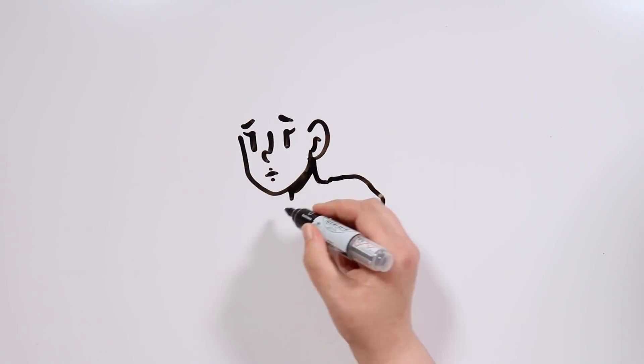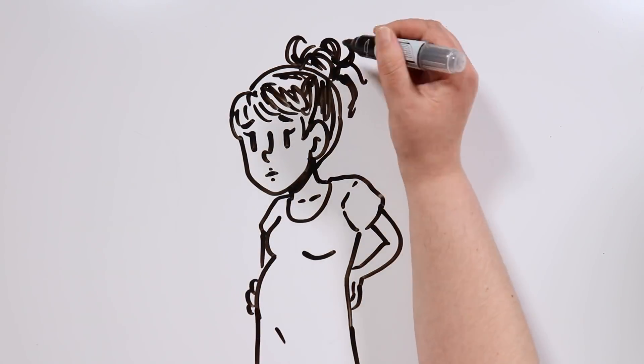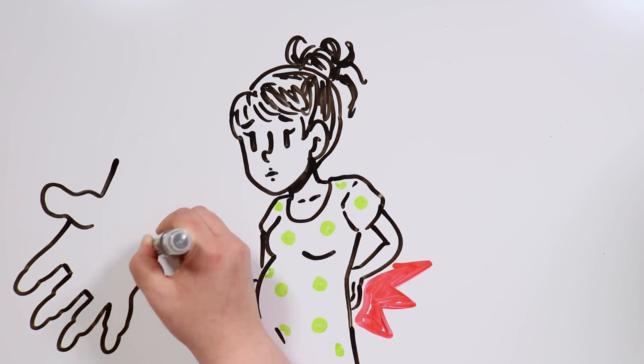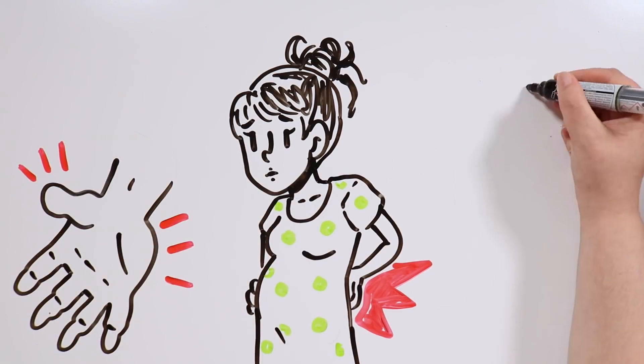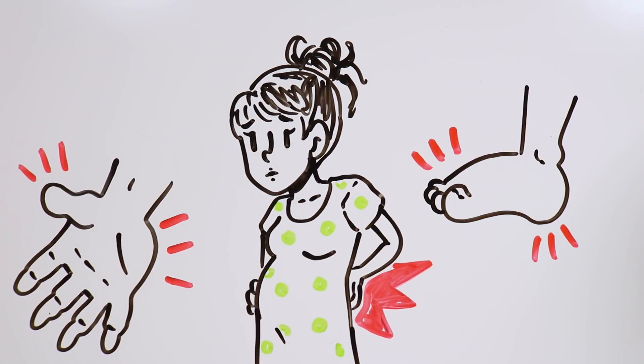During the third trimester of pregnancy, the belly becomes so big that it can cause back pain to the mother. It's also common for a pregnant woman at this stage to experience swelling in her hands and feet due to fluid retention.